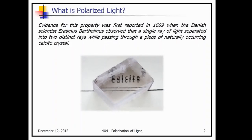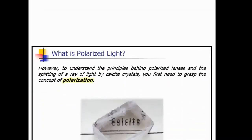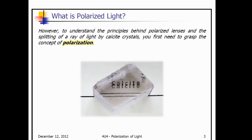The evidence for polarization was first reported in 1669. There was a Danish scientist named Erasmus Bartholinus, and he observed that a single ray of light separated into two distinct rays while passing through a piece of calcite crystal. Here's an image of calcite — you can see how it looks like you can see the bottom of the page where it says 'calcite', but you can also see 'calcite' on the top as well.